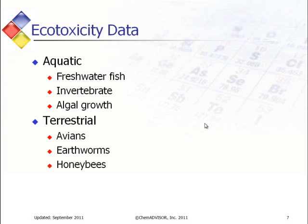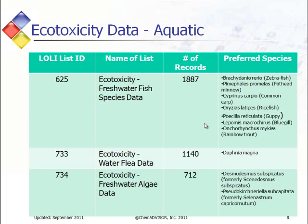Moving over to ecotoxicity data, as mentioned earlier, we do have two broad categories: aquatic and terrestrial. Aquatic is subdivided into different species — freshwater fish, invertebrate data, and algal growth. Terrestrial is divided into several species as well: avian, or birds, earthworms, and honeybees. The next few slides will show you the number of records we have in each of these categories.